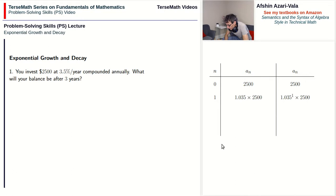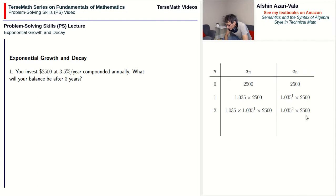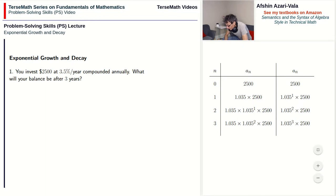Now let's say another year goes by. We're going to earn one hundred and three point five percent of the amount we had at the end of year one. So at the end of year two we get 1.035 of year one's amount, giving us 1.035 to the power of two times two thousand five hundred. When year three comes, we multiply the year two amount by another 1.035, ending up with 1.035 to the power of three times two thousand five hundred. This can continue on in this manner.